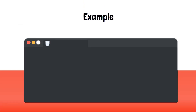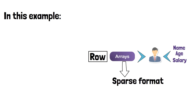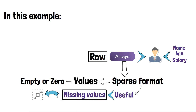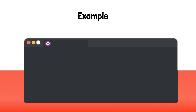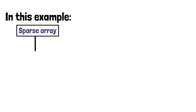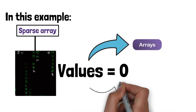Here's an example of a two-dimensional array used to store a list of employees. In this example, each row in the array represents a single employee, and the values in each row represent the name, age, and salary of the employee. Arrays can also be used to store data in a sparse format. A sparse array is an array in which most of the values are empty or zero. Sparse arrays are useful when working with data that has a lot of missing values, as they allow you to store the data in a compact format. Here's an example of a sparse array used to store a matrix, where most of the values are zero. The values that are not zero are stored in the array, and the rest of the values are assumed to be zero.